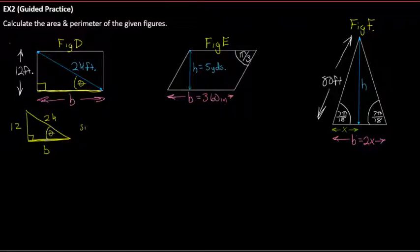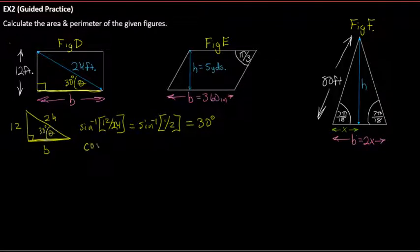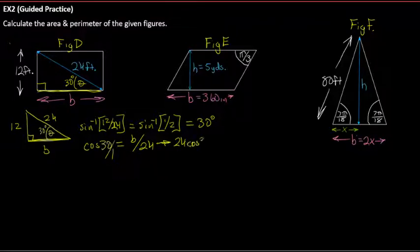To find the angle theta: arc sine of 12/24 equals arc sine of 1/2, which we know is 30 degrees or pi over 6. Now using cosine of 30 equals adjacent over hypotenuse, cross multiplying gives 24·cos(30) = b. That equals 12√3.